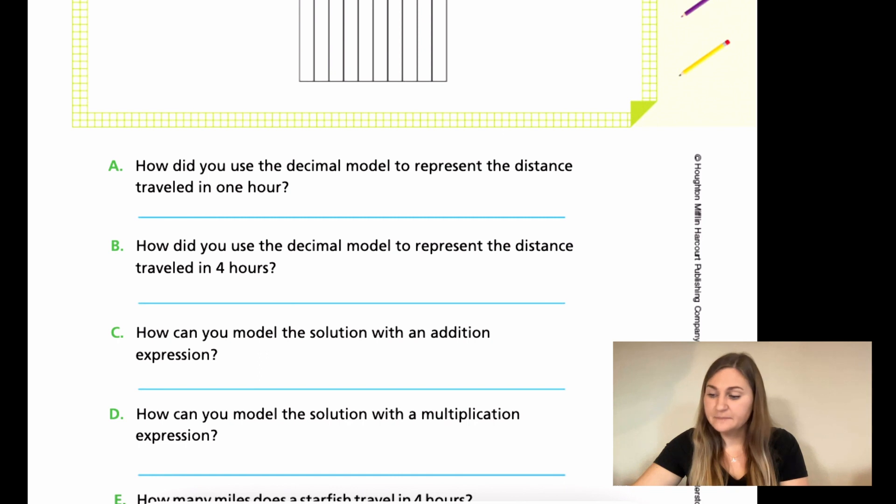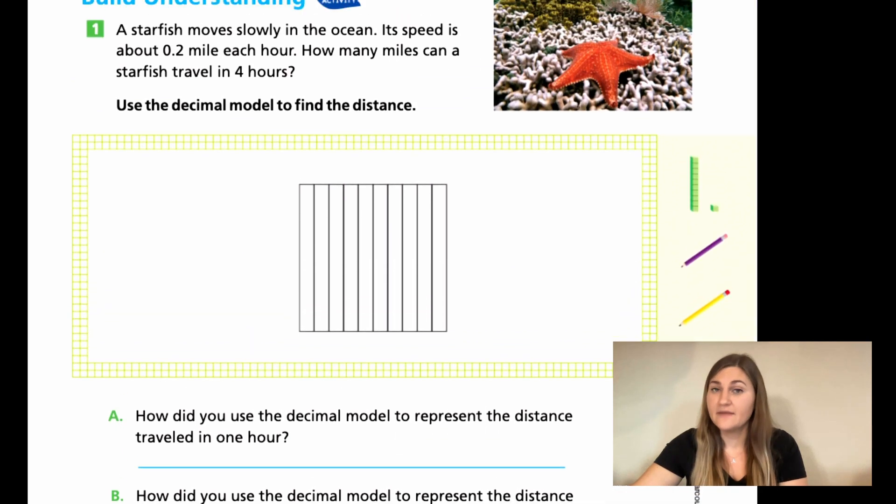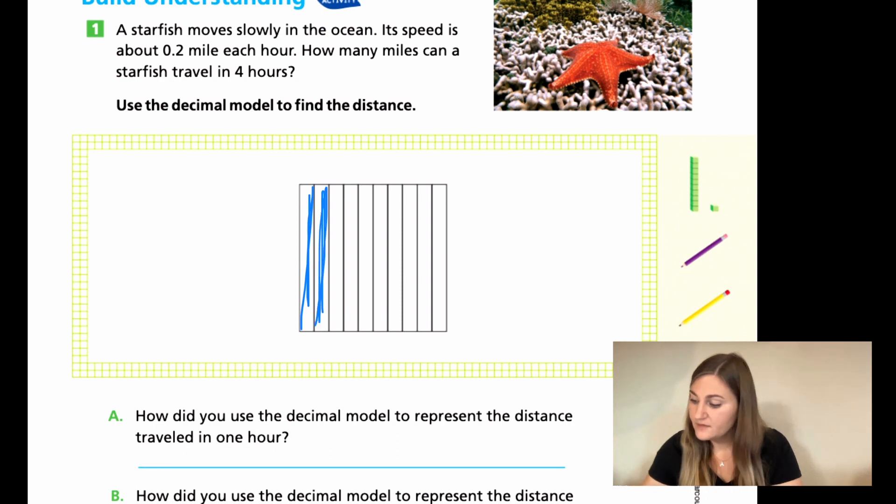Alright, let's go ahead and solve these together. So if I'm doing 0.2, that means I'm going to be coloring in two of those tenths bars. So for one hour, it's going to be 0.2. The second hour is going to be another two. The third hour, another two. And then the fourth hour, another two.